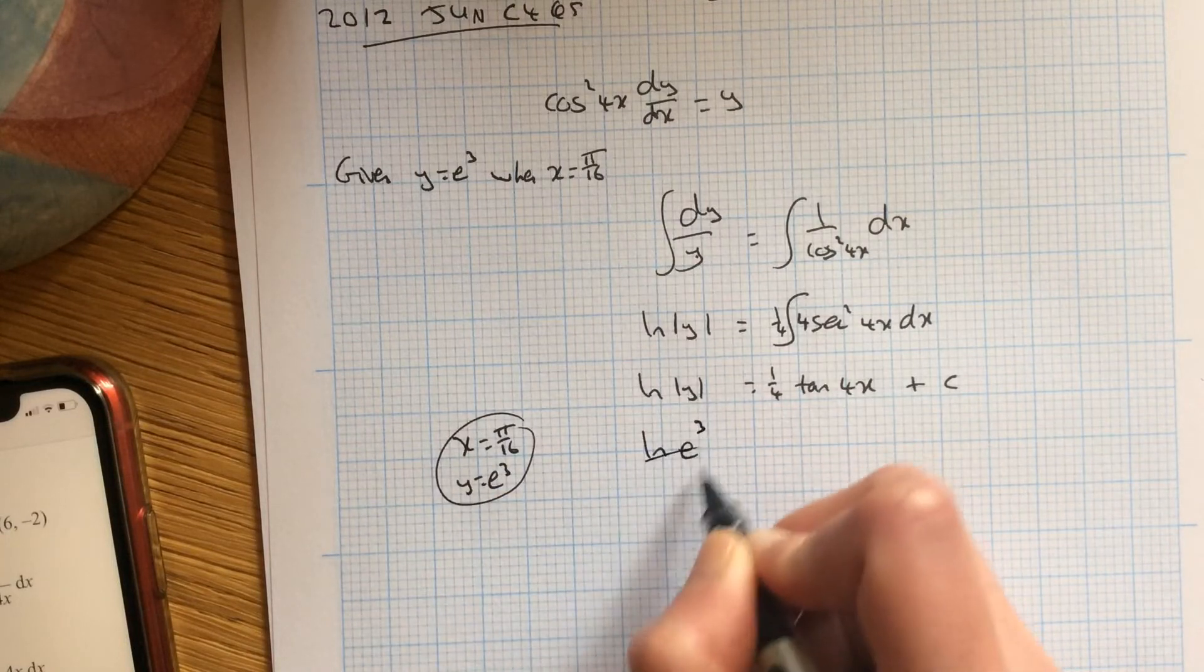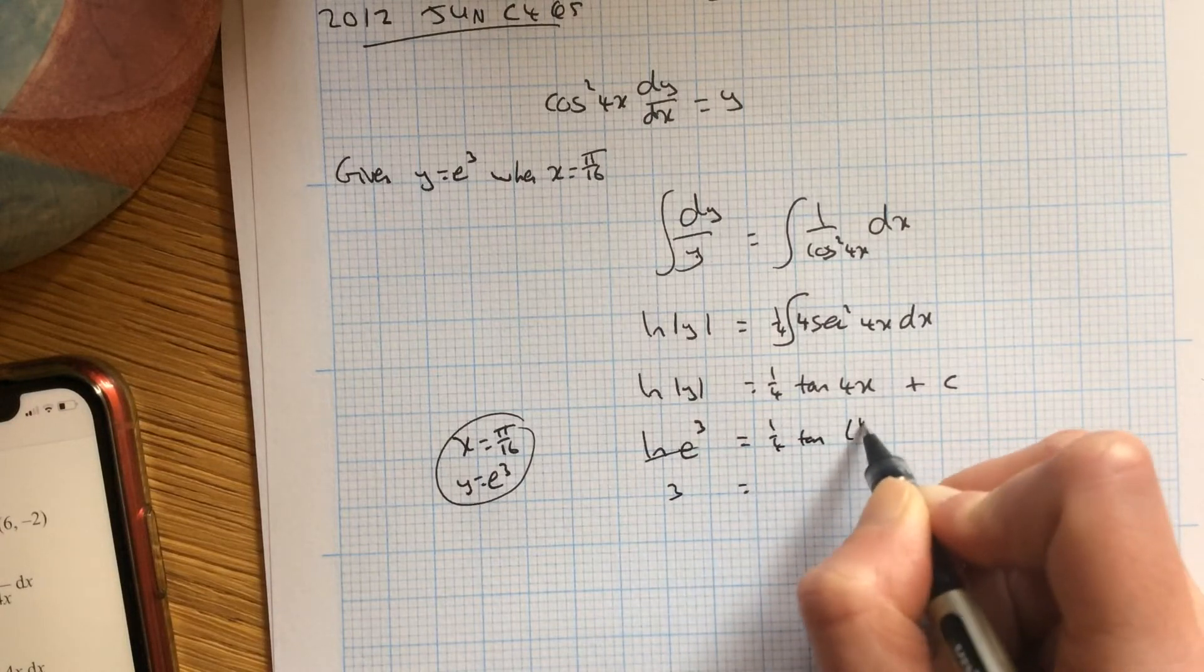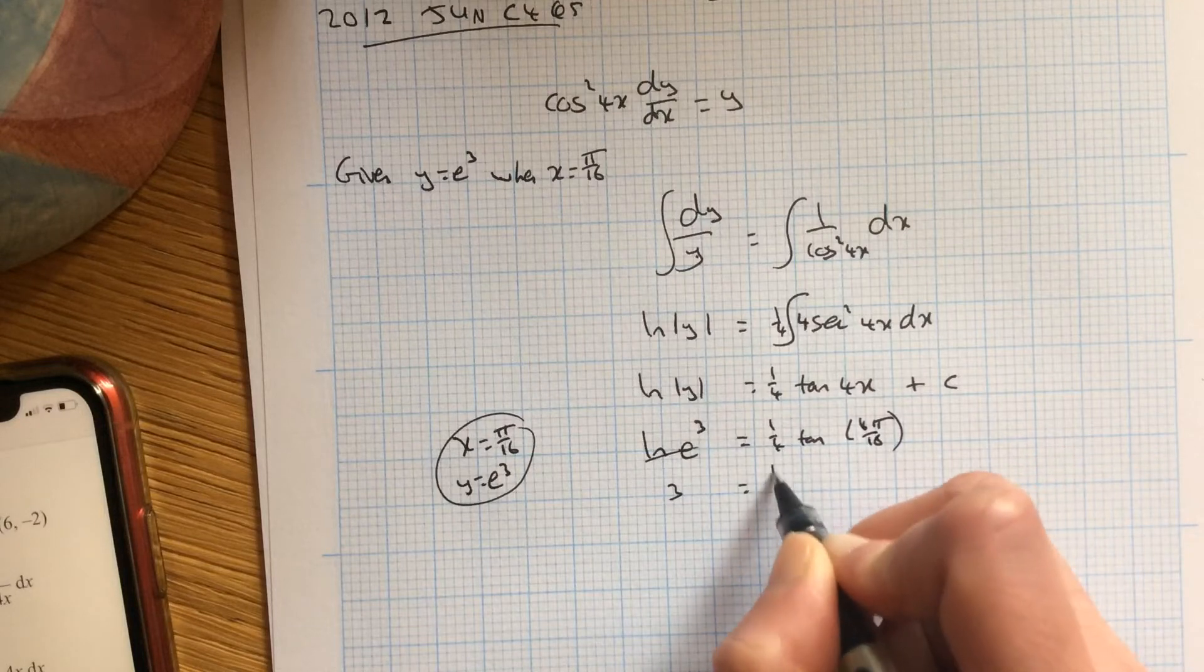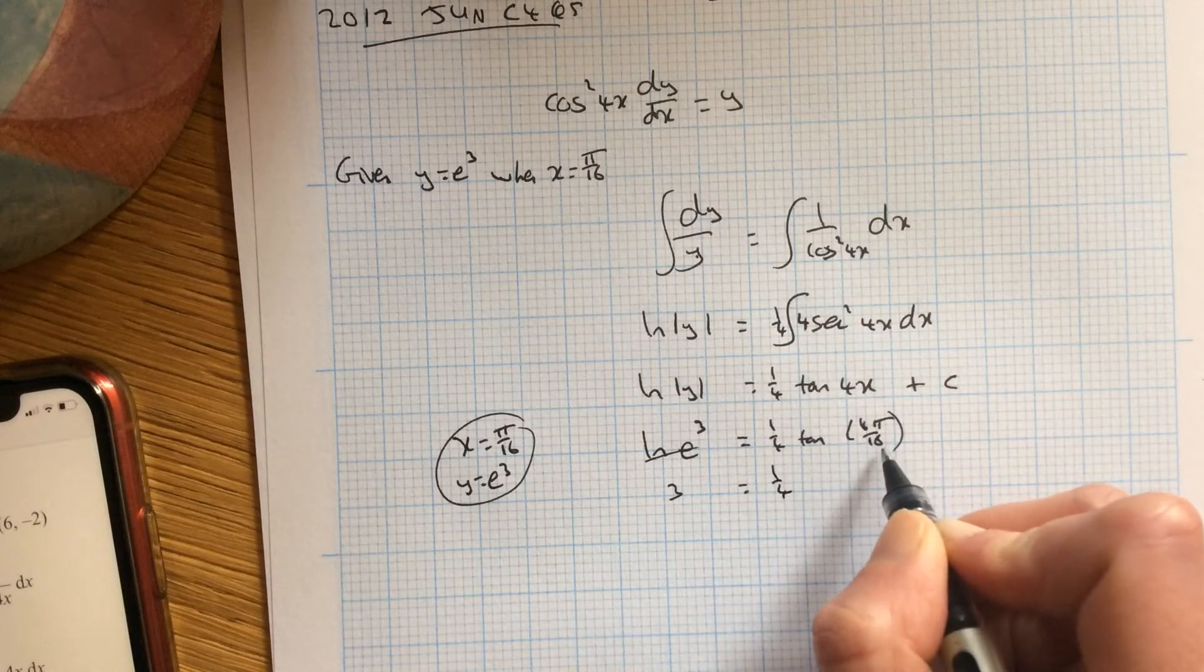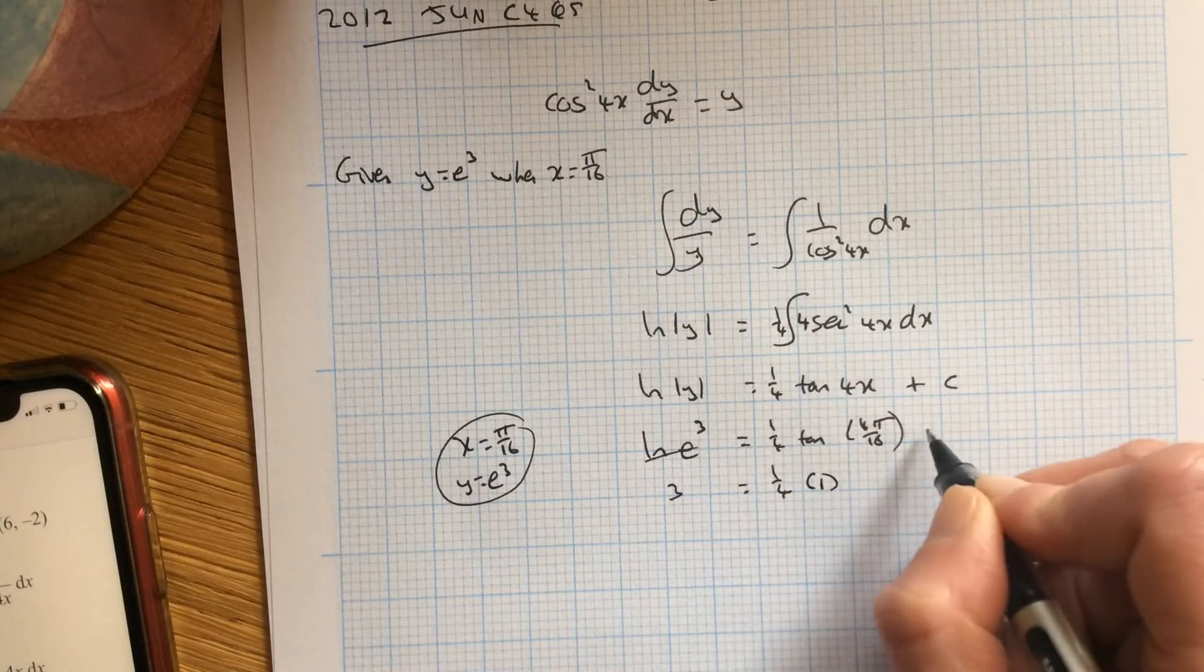So just pop that in. So log e cubed, they will cancel off to give you 3. A quarter, tan 4π over 16. So that's going to give you π over 4, which is 45 degrees. Tan 45 is a 1, plus c.